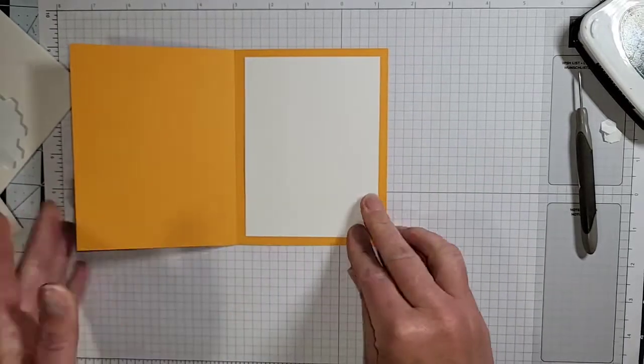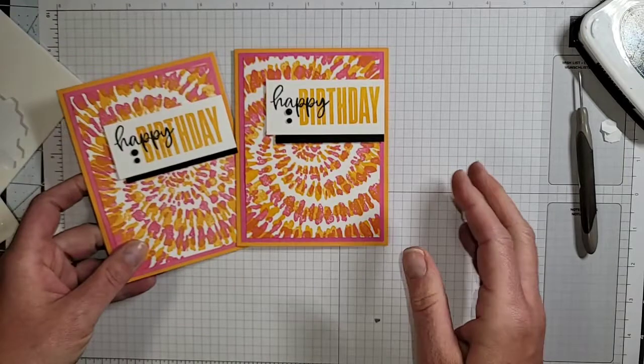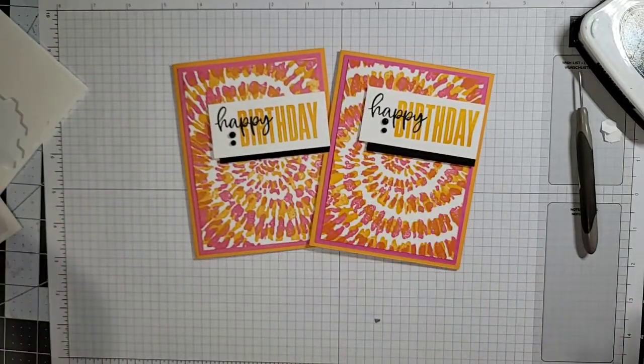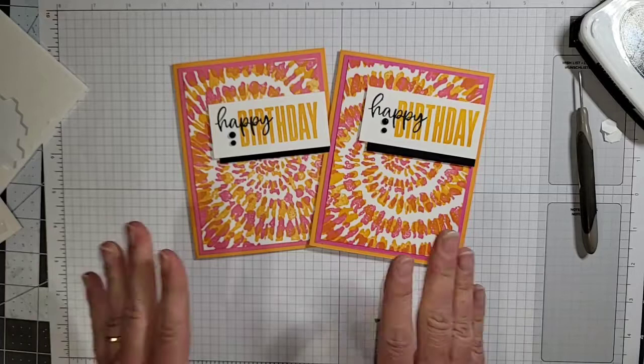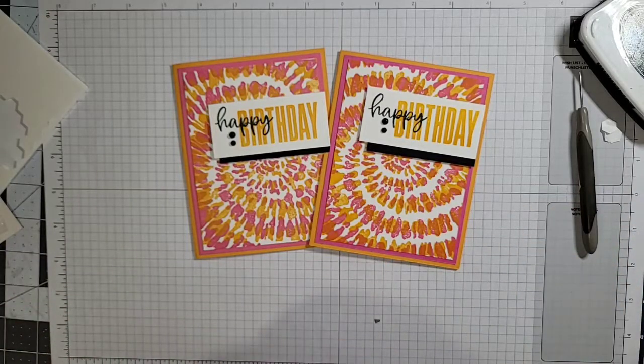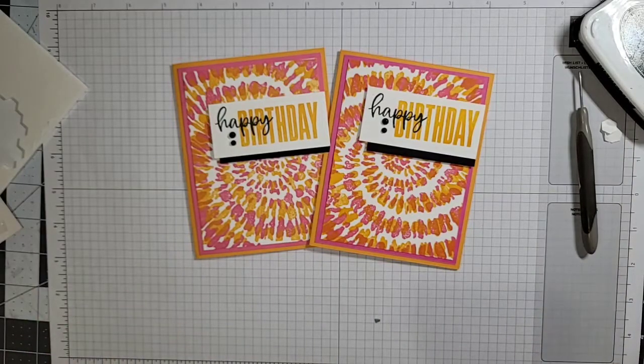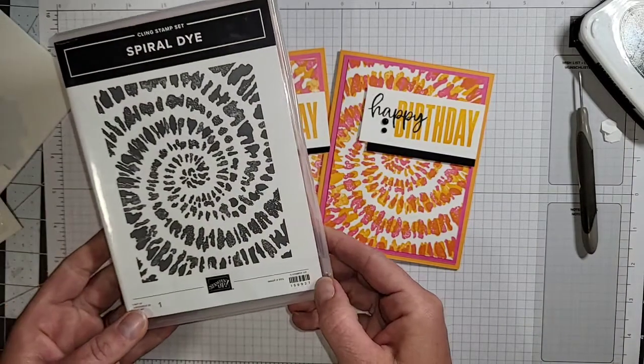There we go, we've got our nice insert, we've got the beautiful summer themed card with these bright colors and this gorgeous Spiral Die. And that card was so simple to make. So I hope that you've enjoyed tonight's video and I hope that it's inspired you to look through the catalog again and see if there's any of those stamp sets hiding that you've maybe overlooked as well.